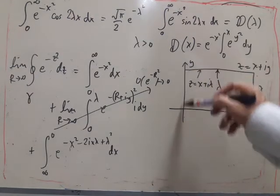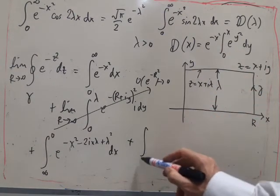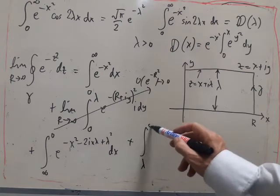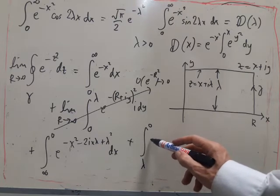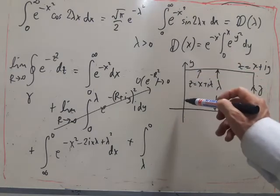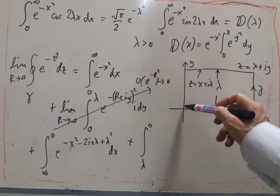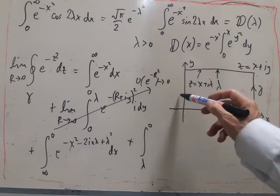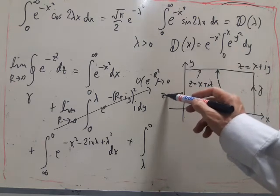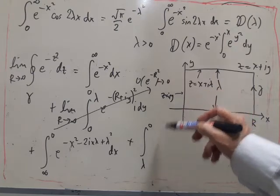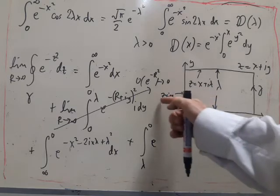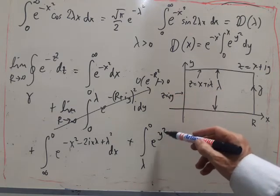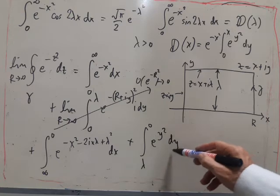And finally, we've got the integral down here. It's the integral from lambda to zero. Of y is just equal to i, z is equal to i lambda along here. Sorry. Z is equal to i y along here. And y varies from lambda to zero. So we end up with e to the, when I square this, I get plus y squared. So I get e to the y squared dy.